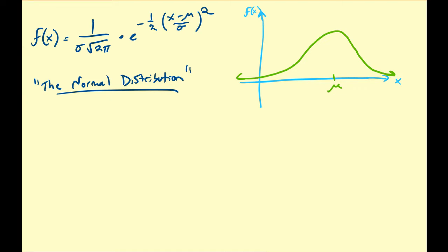As previously discussed, the PDF for the normal distribution is given by this — a somewhat complicated expression. Here sigma represents the standard deviation of the distribution, and mu corresponds to the mean of that distribution. This is a bell-shaped distribution. One may be tempted to verify analytically or numerically that the integral from minus infinity to infinity of f of x with respect to x is equal to 1, but let us just assume that is true.